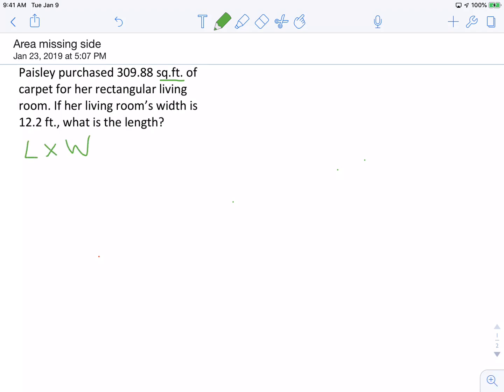So in this case, we know what the width is. We don't know what the length is, so we're going to have to use a variable. We know that the width is 12.2 feet. We don't know what the length is, so we're going to call that x. Yes, we could also call it—let's call it L. We'll call it L for length.